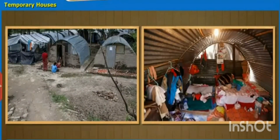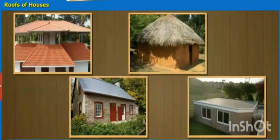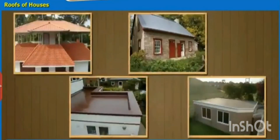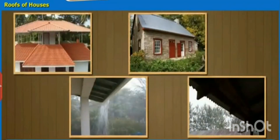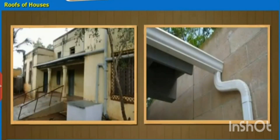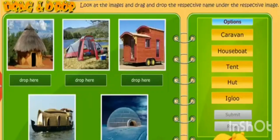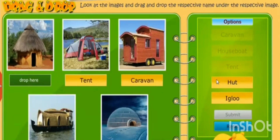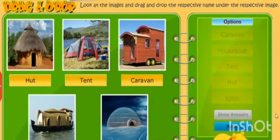The government also provides temporary houses to people for living in for a short period of time. The roofs of these houses are also not so permanent, and the roofs of houses are made according to the weather and climatic conditions.